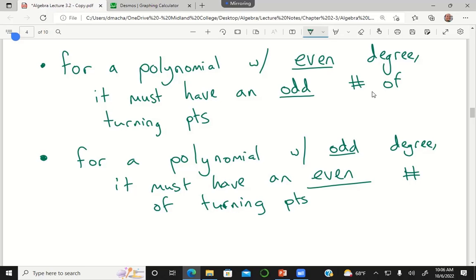So if I have a polynomial of degree 17, am I allowed to have 12 turning points? Yes, so a polynomial of degree 17 has an odd degree, so it has to have an even number of turning points less than or equal to 16. So 12 turning points would be totally acceptable.